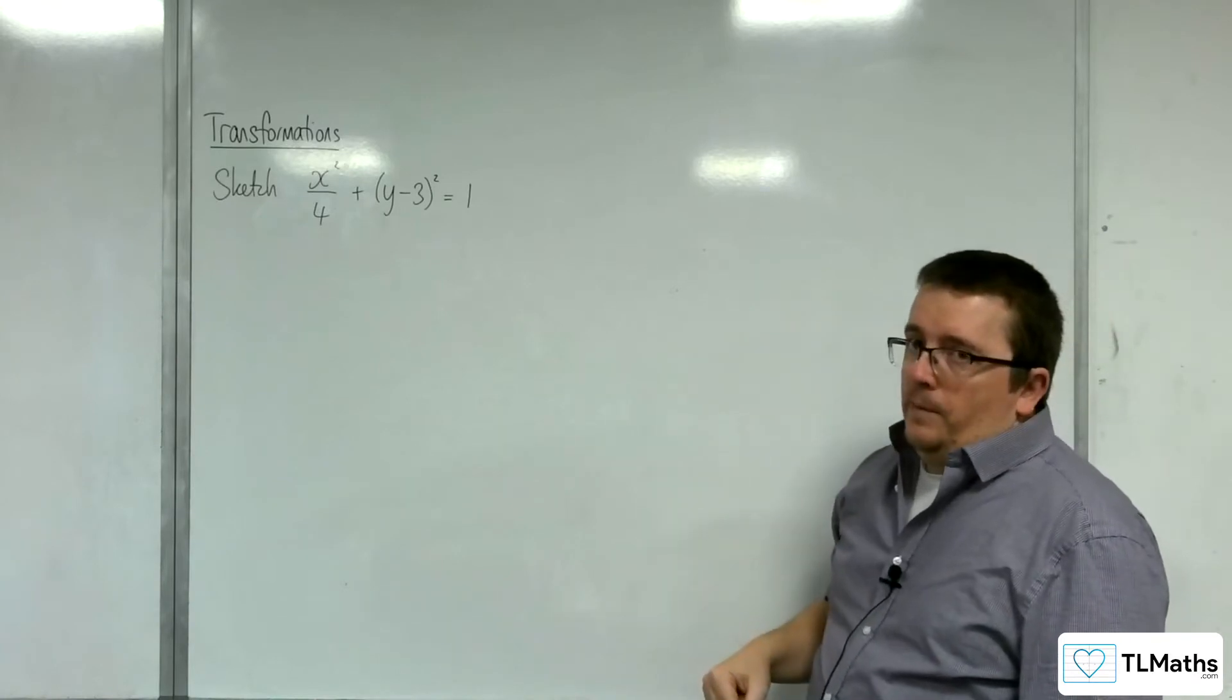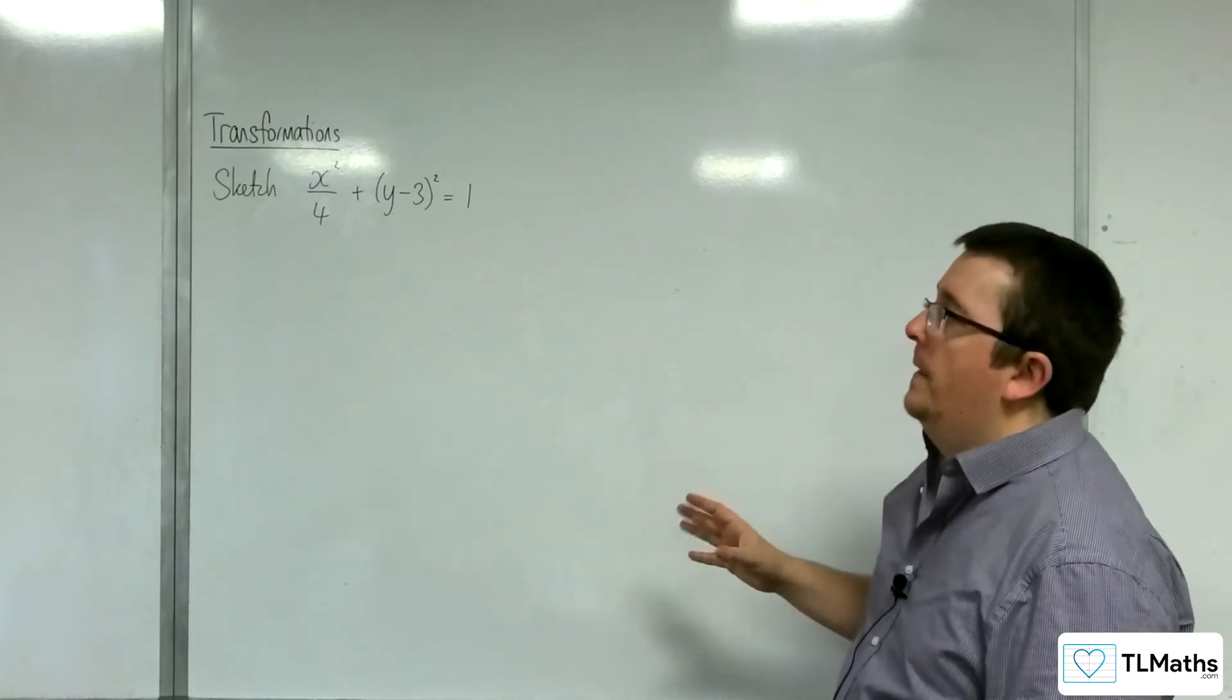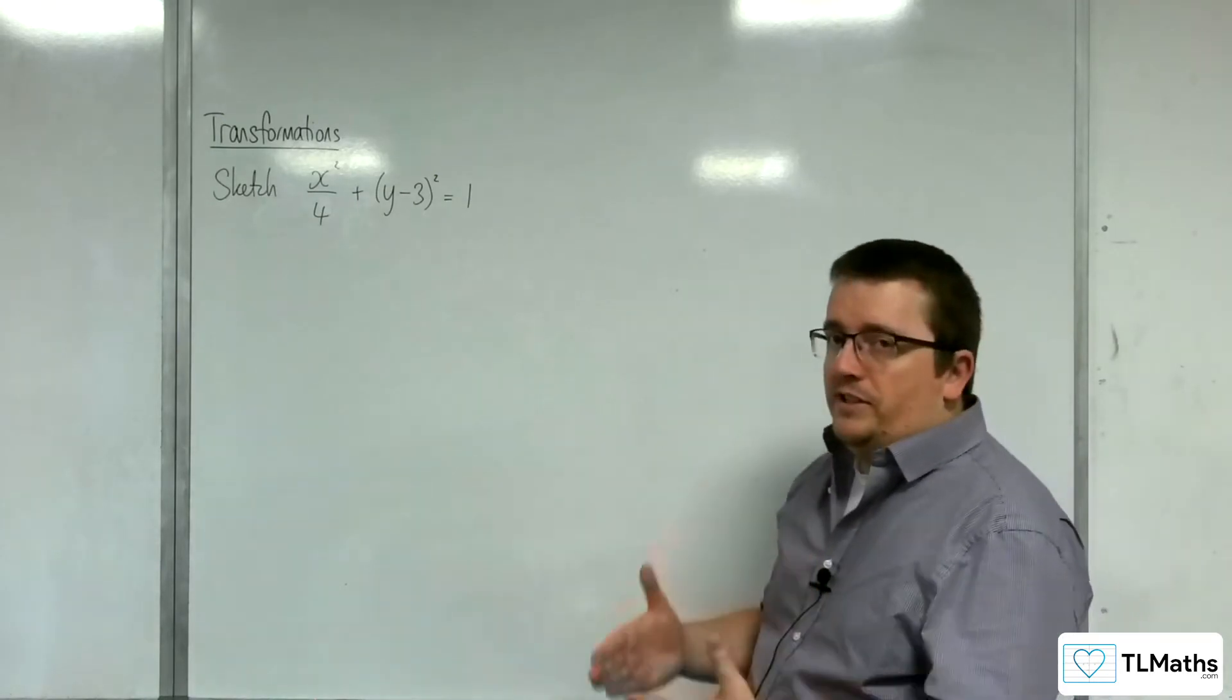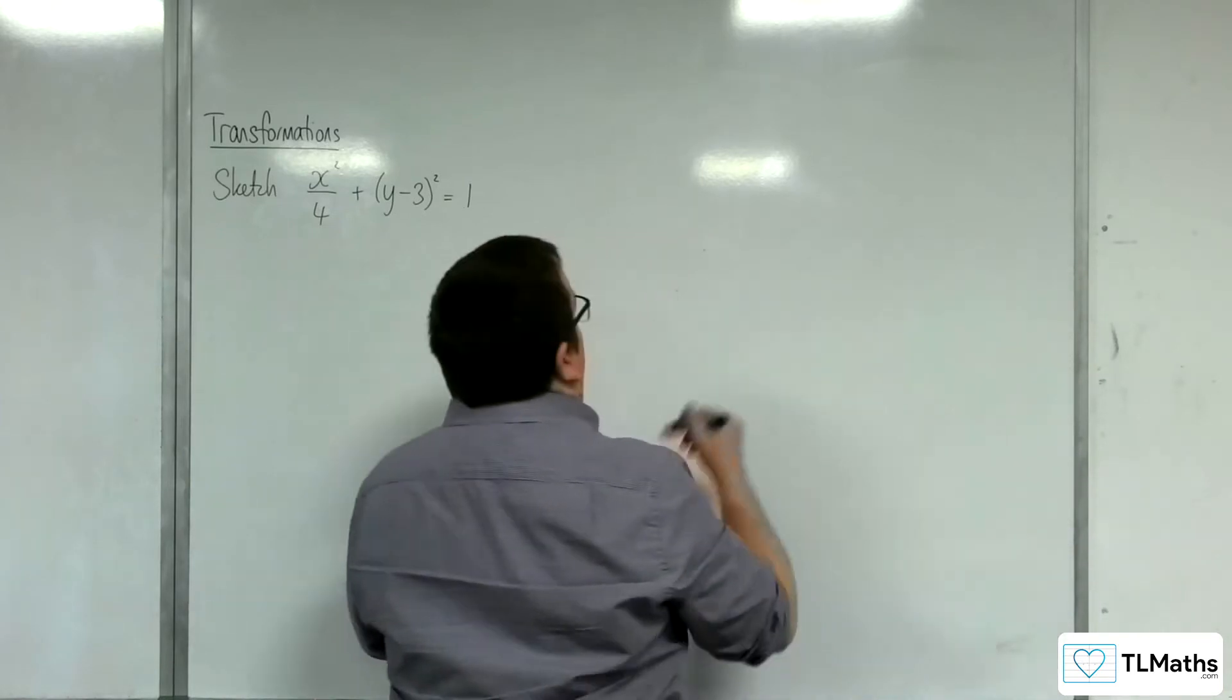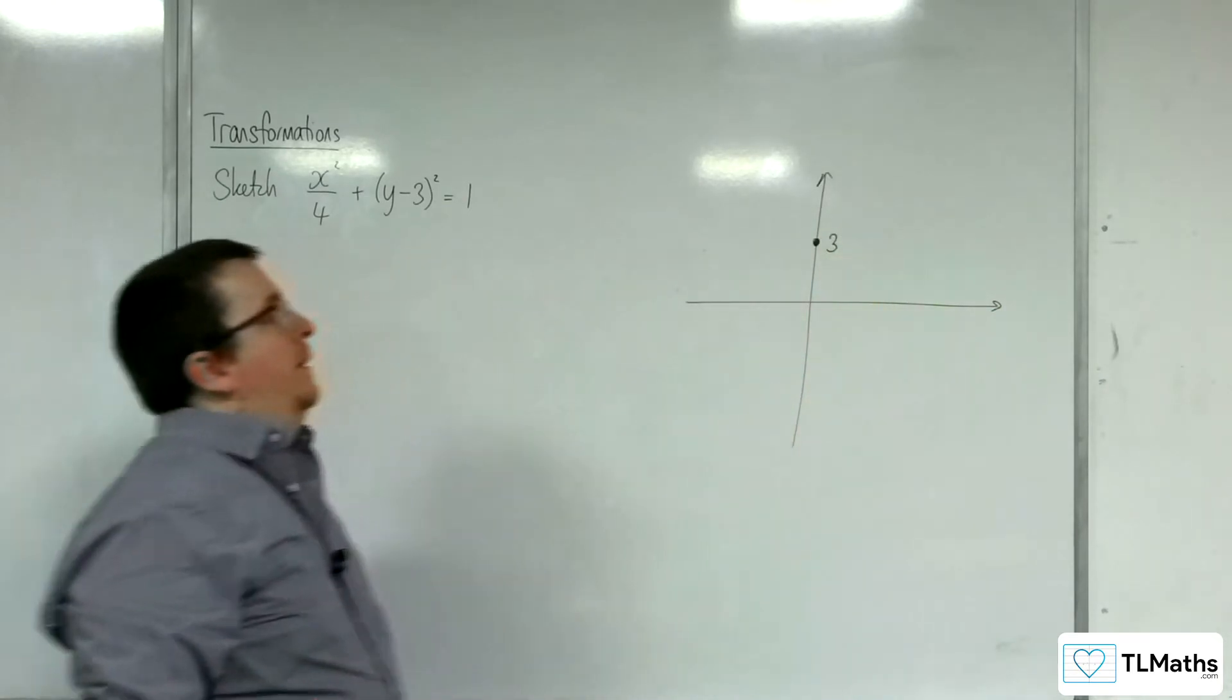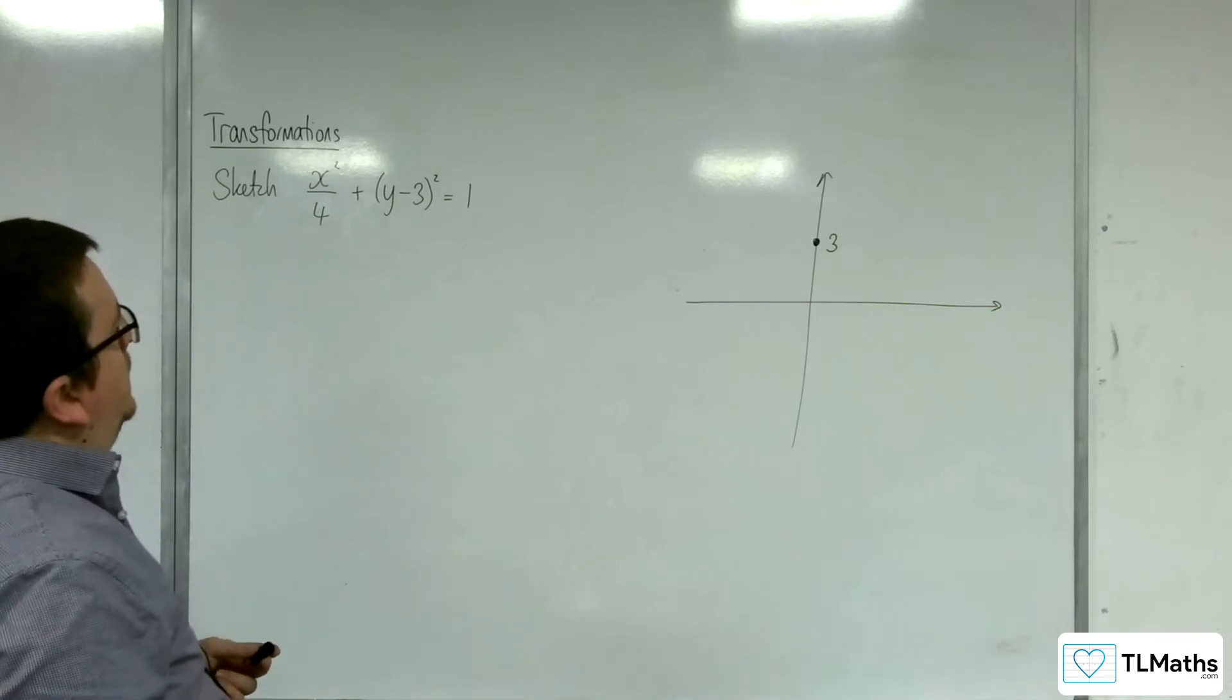Now, because it's an ellipse, if it had been x squared over 4 plus y squared equals 1, we'd be all right with sketching this straight off the bat. But the problem is that we've got the y take away 3 in here. So the y has been replaced with y take away 3, which means the graph has been translated by the vector 0, 3. So 3 units upwards. So that means that the centre of the ellipse is now at 0, 3. So that's the first thing I can identify on my sketch. That's where the centre of the ellipse now is.